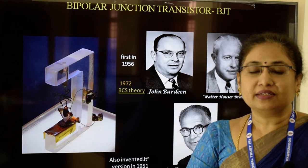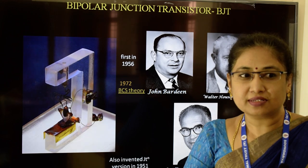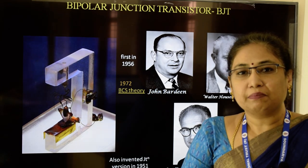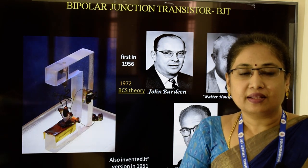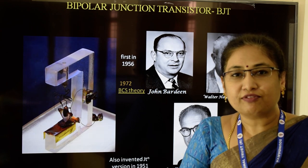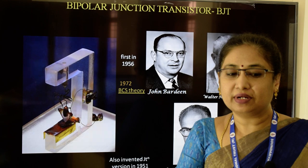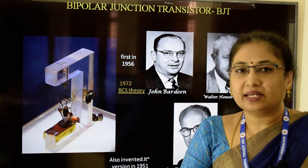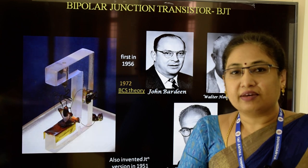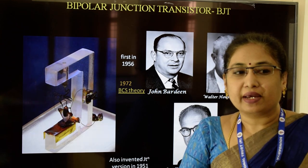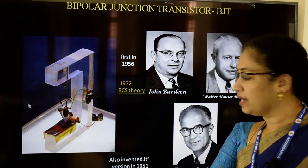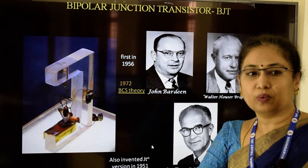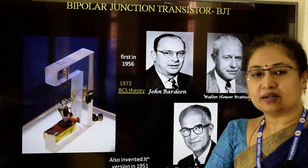Our brain contains around 100 billion cells called neurons — the tiny switches that let you think and remember things. Computers contain billions of miniature brain cells as well, called transistors, and they are made from silicon, a chemical element commonly found in sand. The giant strides we have made in the field of electronics followed the invention of transistors, first invented over half a century ago by John Bardeen, William Shockley, and Walter Brattain. The inventors of transistors received a Nobel Prize in Physics.